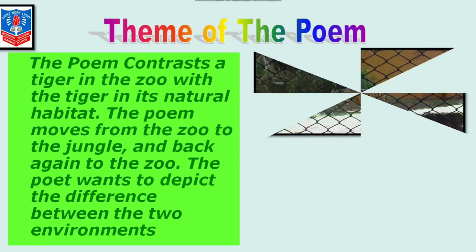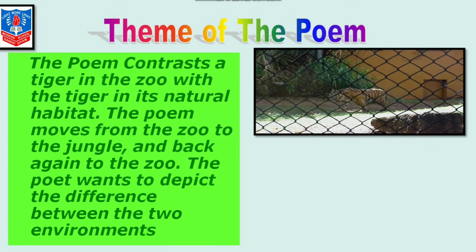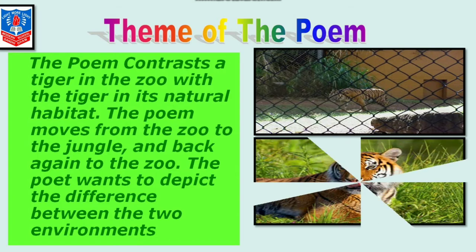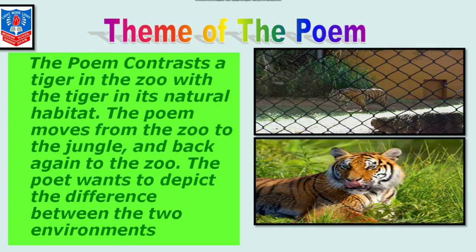The poet wants to depict the difference between the two environments. The first picture shows the tiger kept in the zoo, and the other describes the tiger in its natural habitat. What makes the difference between both these environments — this is what the poet wants to discuss.